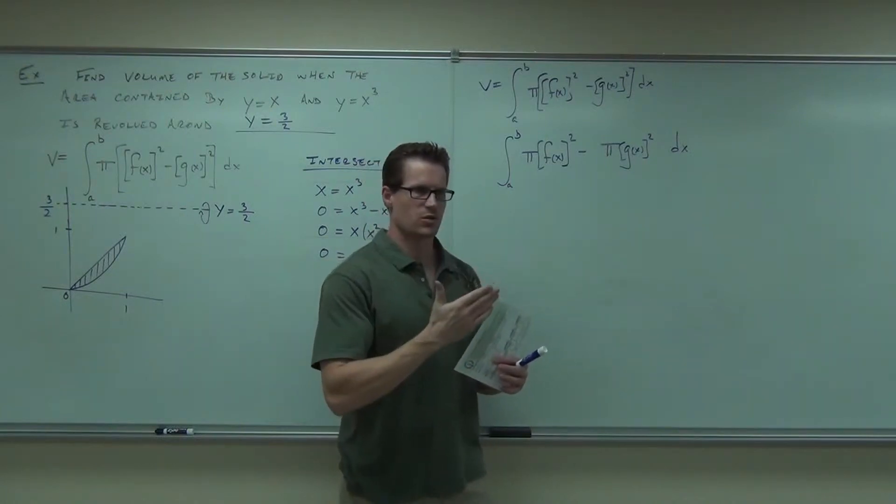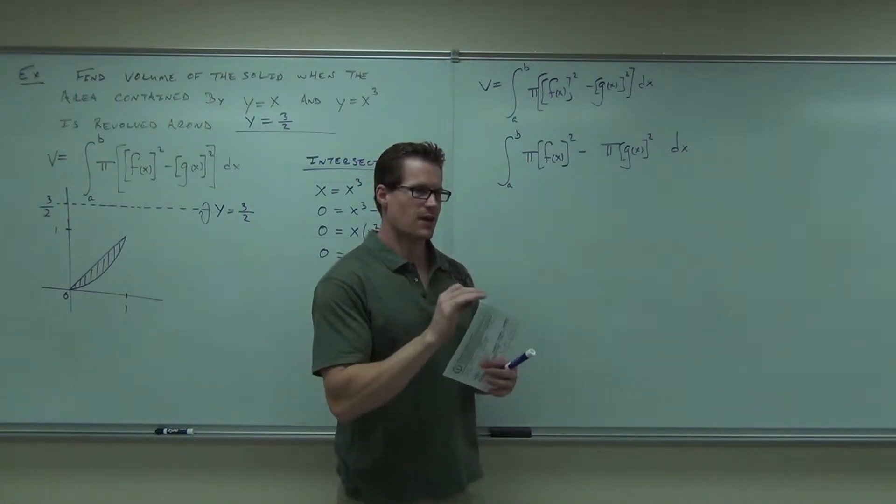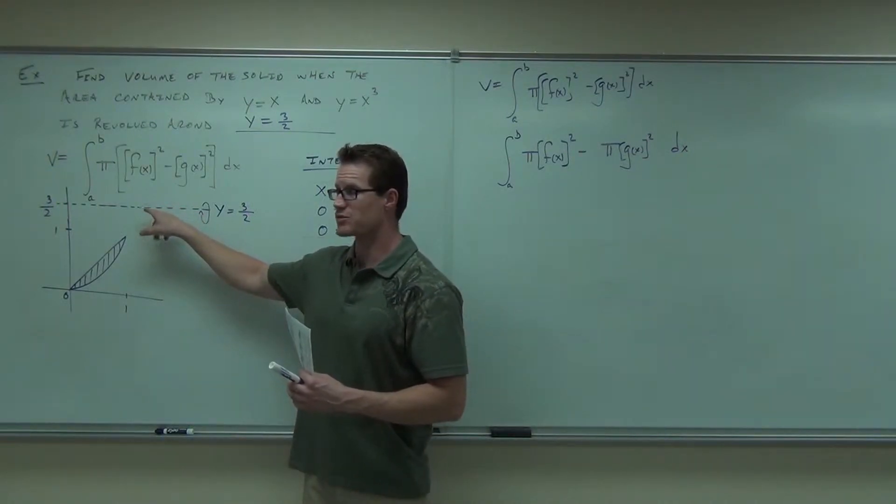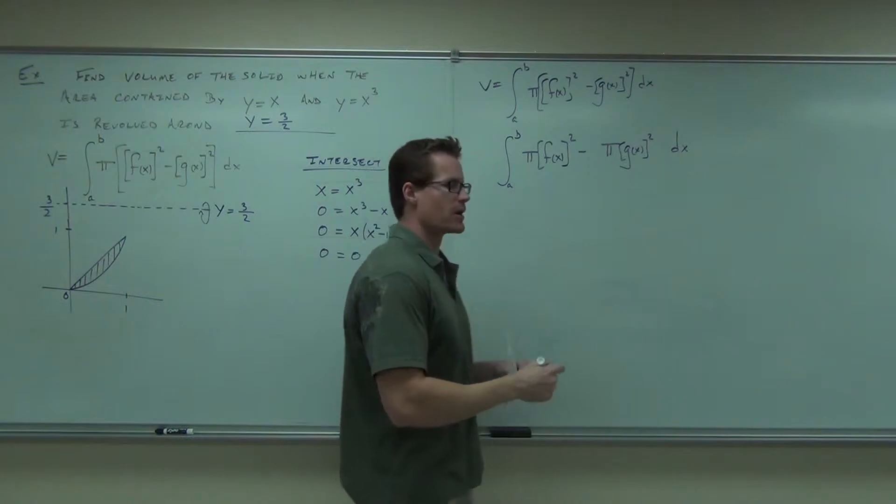The area of those cross-sections, remember doing the cross-sections by washers? If we can find that area of those cross-sections incorporating this y equals 3 halves, we should be able to do a very similar thing. Let's think about it.